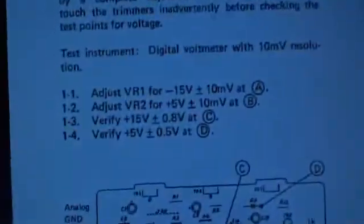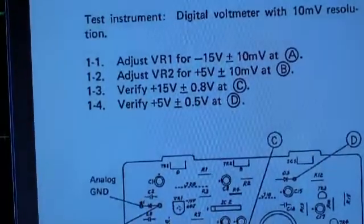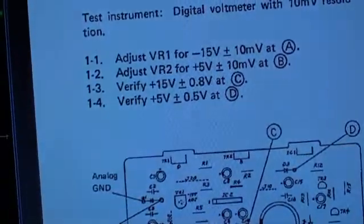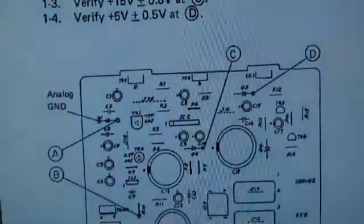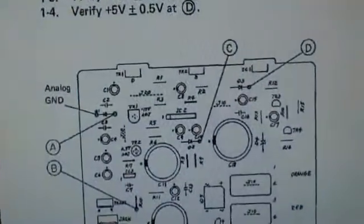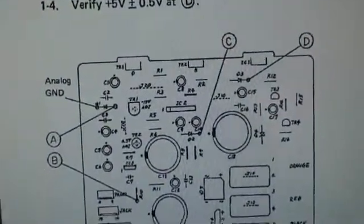Next, verify 15 volts plus 0.8 volts at point C. There's point C right there. So, let's do that next. Point C.